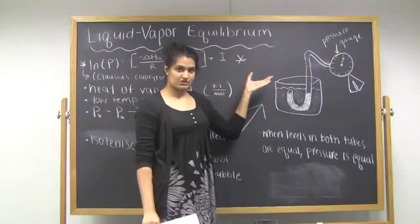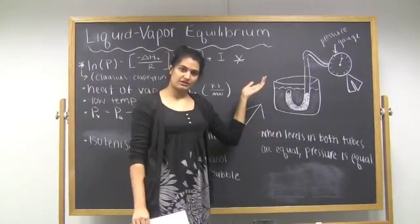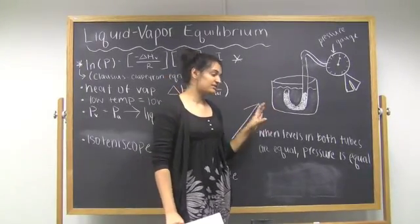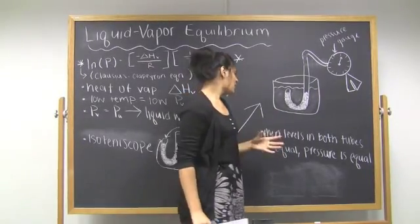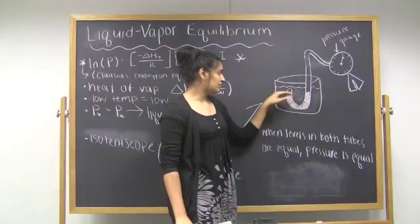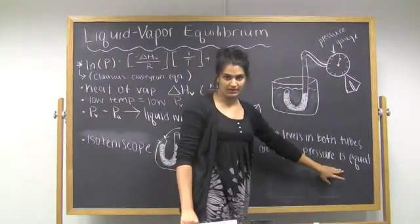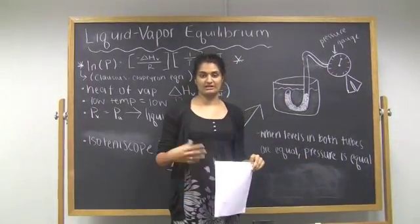Now, as you increase the temperature, the vapor pressure will also increase, and as you cool the water bath and decrease the temperature, the vapor pressure will decrease as well. When the levels in both the tubes are equal, the pressure is equal as well, and this is what you will record in your lab notebook.